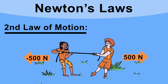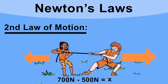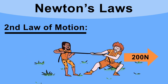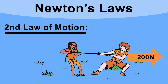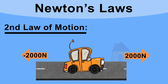In the tug of war, the team on the right suddenly start pulling with a force of 700 newtons. Now we have 500 newtons to the left and 700 newtons to the right, giving a resultant force of 700 minus 500, which is 200 newtons to the right. As we can see, everybody starts moving in the direction of that force, off to the right.